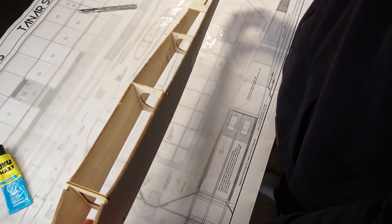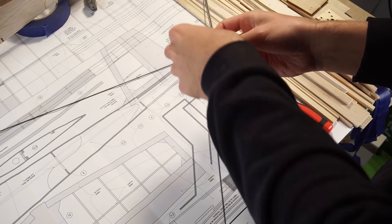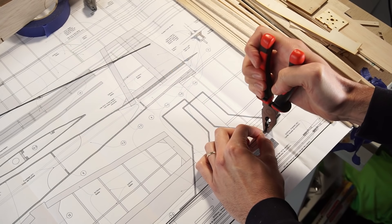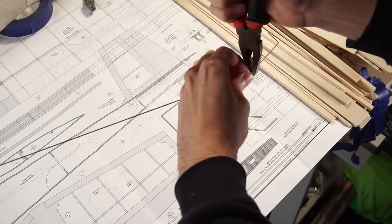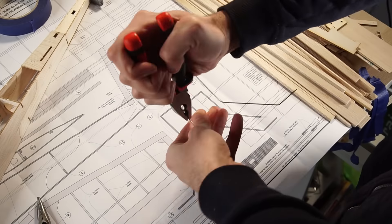Before covering the rest of the fuselage with the balsa wood sheets I'm going to start making the landing gear with this wire. This wire is included in the kit. Make sure to have the right tools to bend and cut this wire. Some good and strong pliers and wire cutters are recommended.